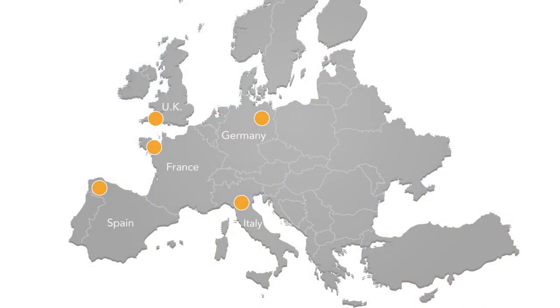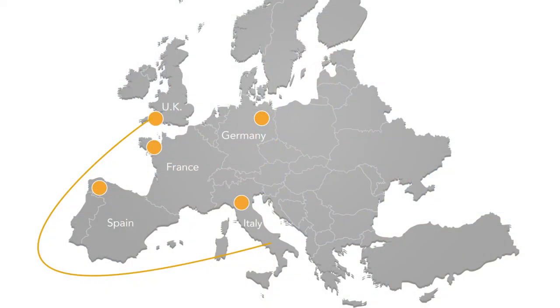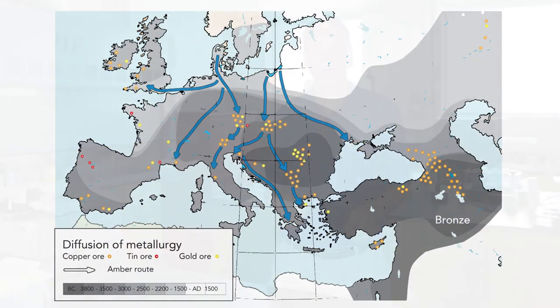Bronze required alloying copper with tin, but these don't come from the same areas. Early bronzes were made in Mesopotamia in the eastern Mediterranean, but copper was coming from southern Italy and tin, surprisingly, was coming from England as far back as 2000 BC. This meant bronze had an enormous impact on trade. A map shows how metallurgy diffused from what is present-day Iraq and spread east and west from there.